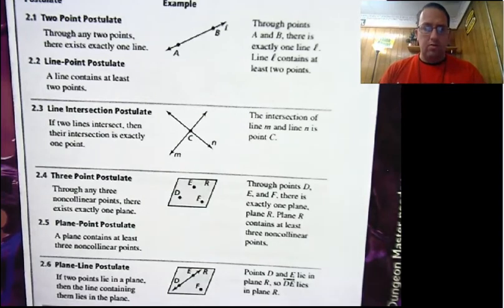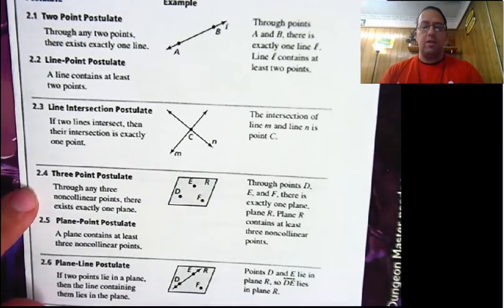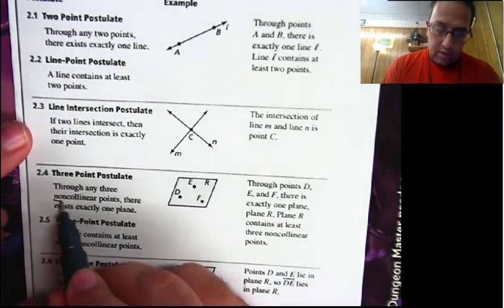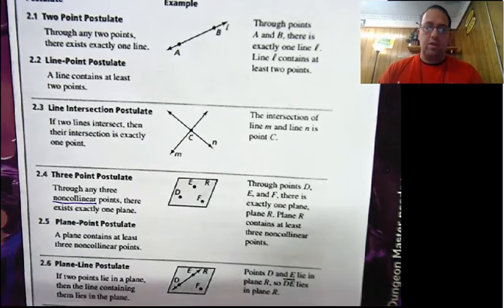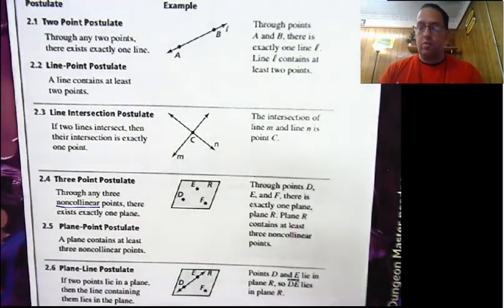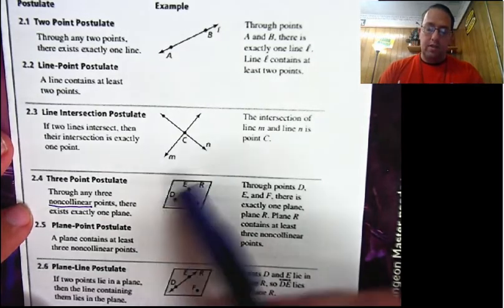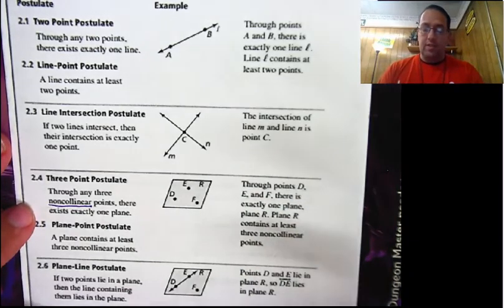Next we have the three-point postulate: through any three non-collinear points, there exists exactly one plane. One thing very important here — this does have to be three non-collinear points. If the three points are in a line, then you have an infinite number of planes that could contain that line. It's very important that they are non-collinear; that spreads it out, and it does have to be just one plane. You can't have two planes that contain those three points — only one. So through points D, E, and F, there is exactly one plane, which is plane R.